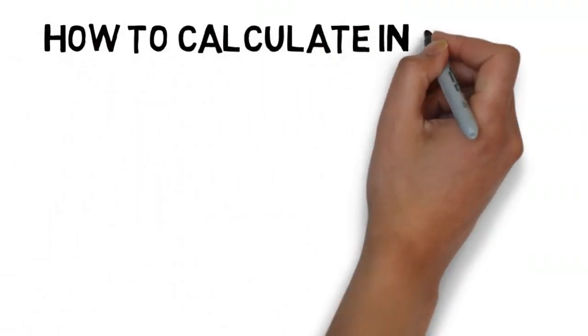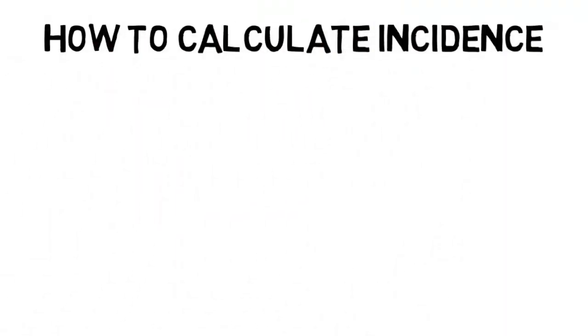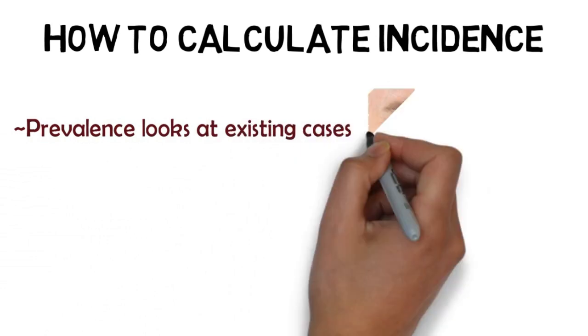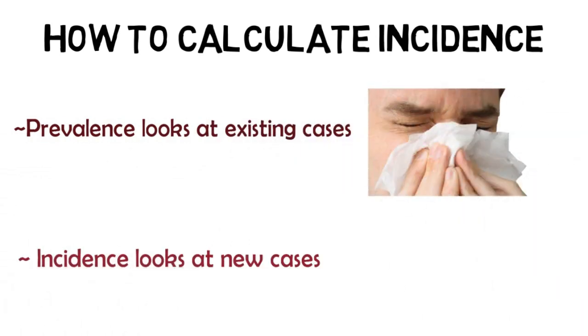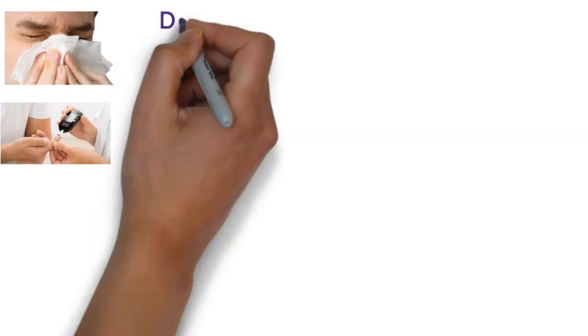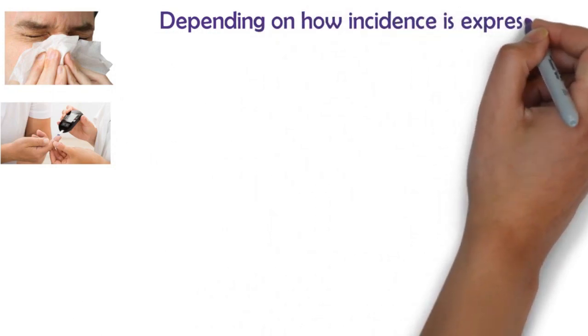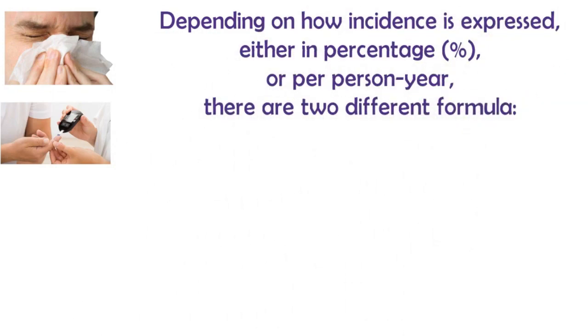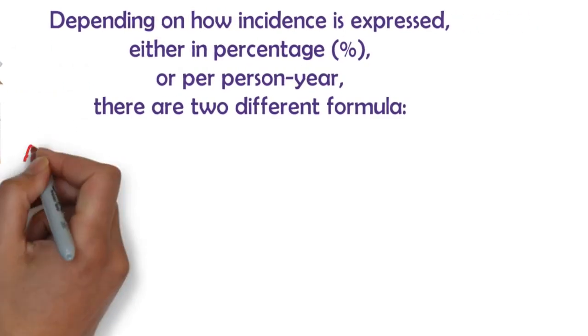How to calculate and report incidence or incidence rate. Prevalence looks at existing cases while incidence looks at new cases. Depending on how incidence is expressed, either as a percentage or per person-year, there are two different formulas.